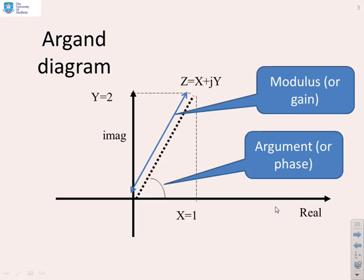Just a reminder of the basics. Here's an argand diagram and we've plotted a complex number z equals x plus jy. We want to remind ourselves what do we mean by modulus or gain and argument or phase. The modulus is the distance from the origin marked clearly here, and phase is the angle between the positive real axis and a line drawn from the origin to the complex number.